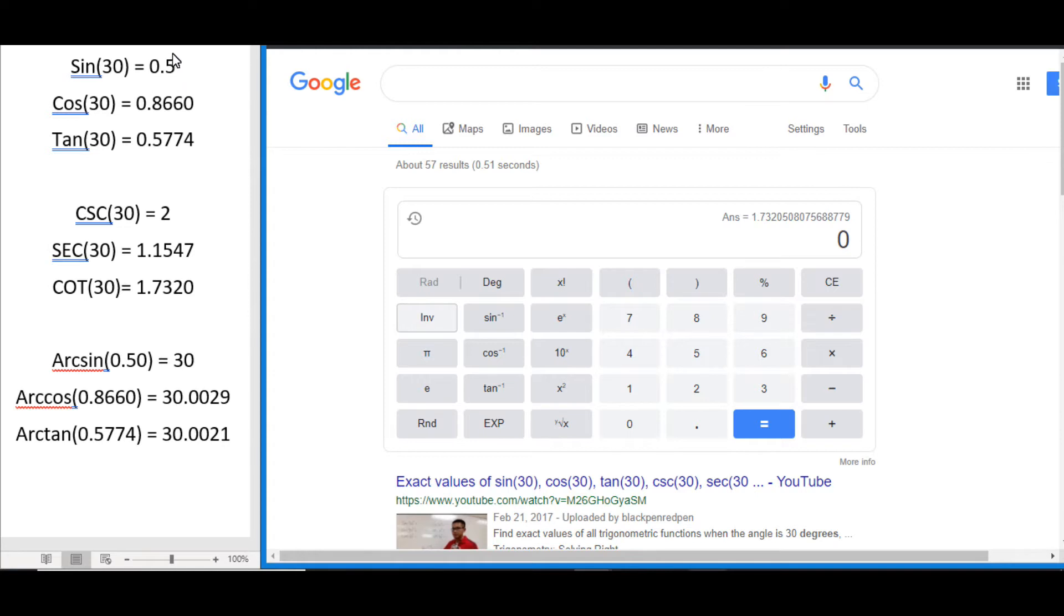We can go from the 0.5 and find out how many degrees we used to find it. So for this example, let's say we want to do arc sine of 0.5. Go sine 0.5 equals and we see we get 30. So that lets us know we use 30 degrees to get to 0.5.